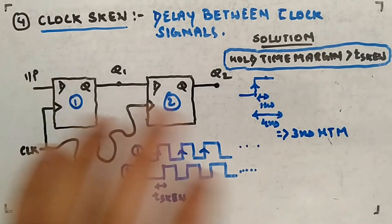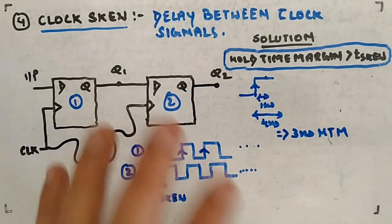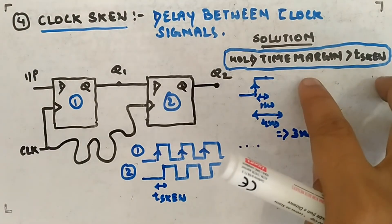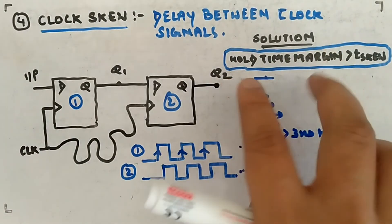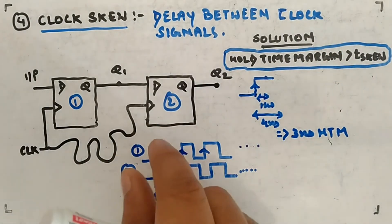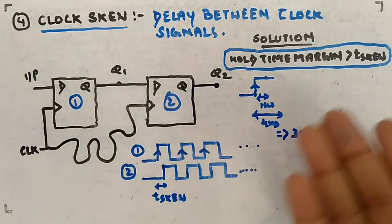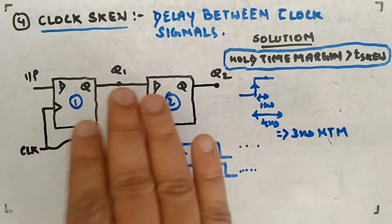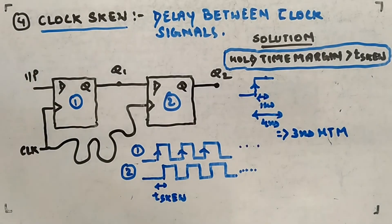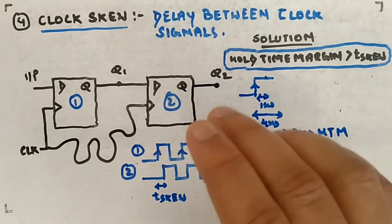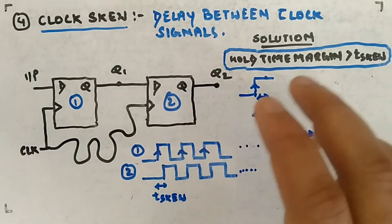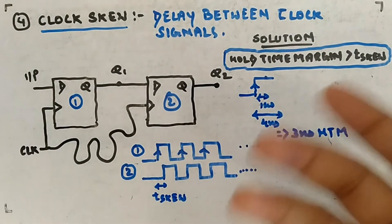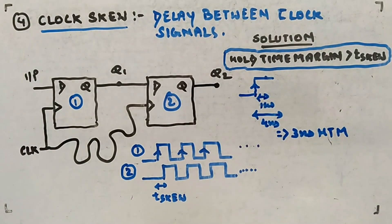The key takeaway is to visualize the expression: keep the hold time margin large so the second clock has enough time accounting for the skew, and the input stays stable so the output doesn't change. That was one of the characteristics of flip-flops. Now let's move on to some applications of flip-flops — we've been studying flip-flops and latches as a module, and now we'll apply them in sequential circuits.